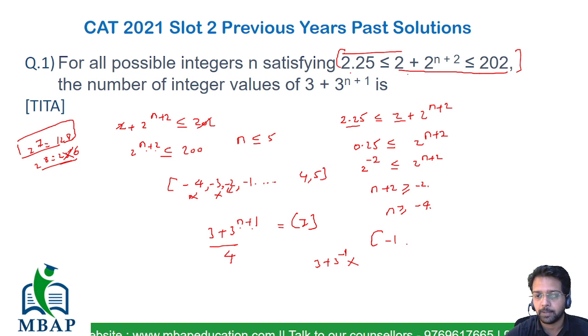So the range of values I can consider for 3 + 3^(n+1) to become an integer will be -1, then 0, +1, +2 till +5. So how many values do I see? I can see all the values which are counting 7 in number, and hence the answer for the given question would be 7.